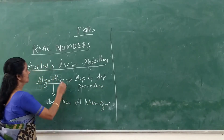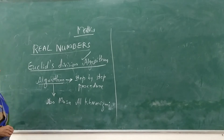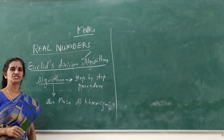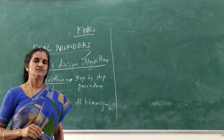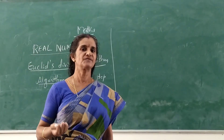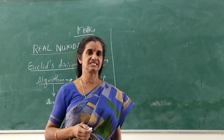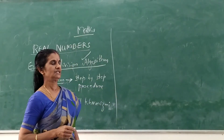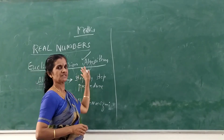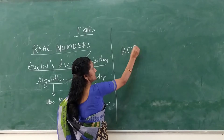Now, Euclid's Division Algorithm. This Euclid's Division Algorithm is a technique for finding the HCF — Highest Common Factor — of two given positive integers. That means it is a technique. Euclid's Division Algorithm is the technique to find the HCF of two given numbers.